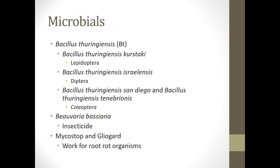Some of the microbials you'll see include Bacillus thuringiensis, or Bt. Bt kurstaki is for Lepidoptera — butterflies and moths. Bt israelensis is for Diptera, which includes the fly family, such as fungus gnats in a garden setting. Bt San Diego and Bt tenebrionis are for Coleoptera, the beetle order. Beauveria bassiana is an insecticide, and Mycostop and Gliogard work for root rot organisms.